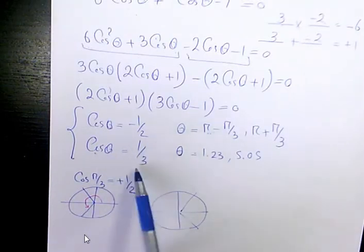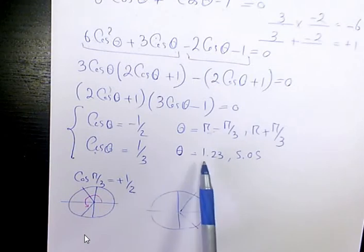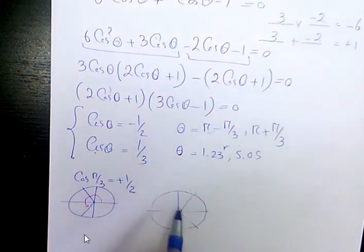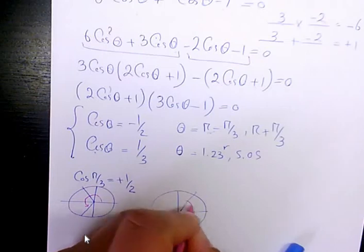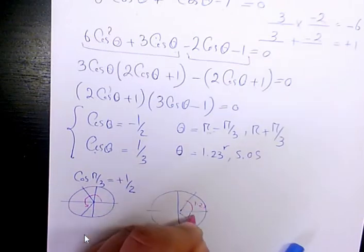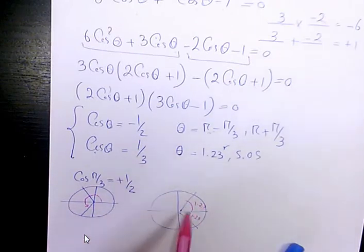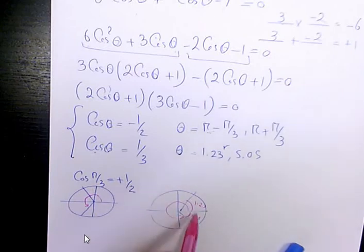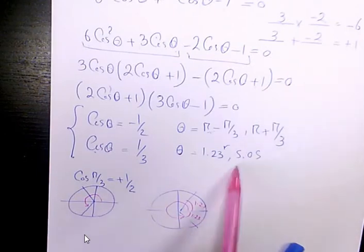So it's going to be 1.23 radian, this part. And so this part is going to be 1.23 as well. So the answer is going to be 2 pi minus 1.23. It means that 2 times 3.14 minus 1.23, which is going to be 5.05.